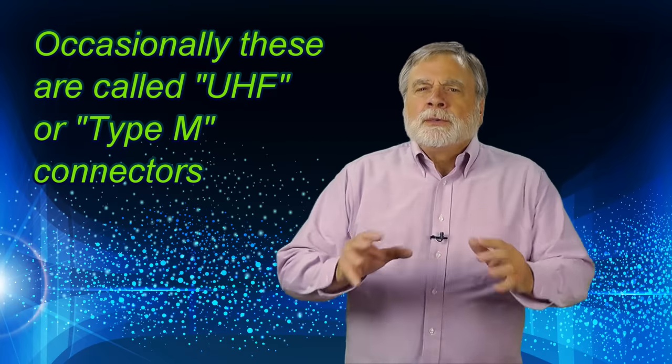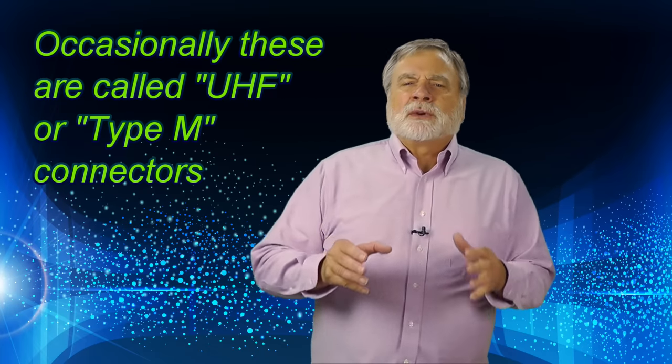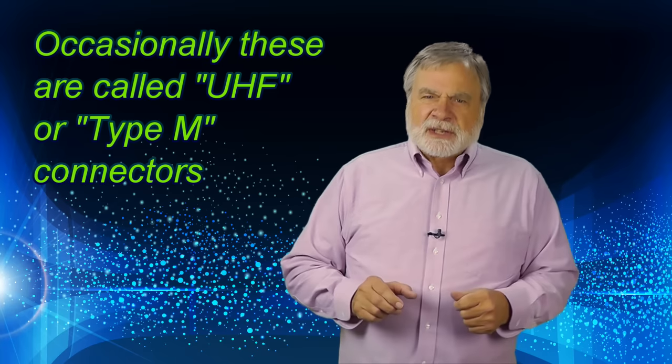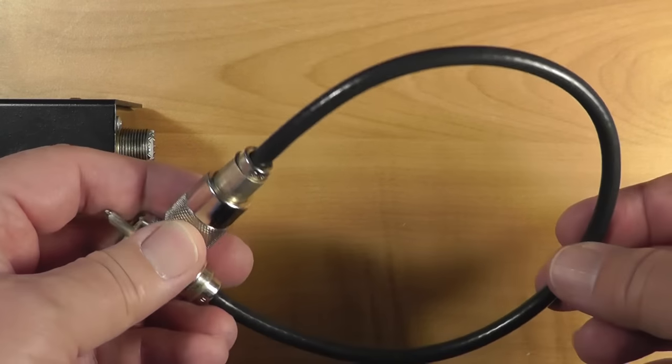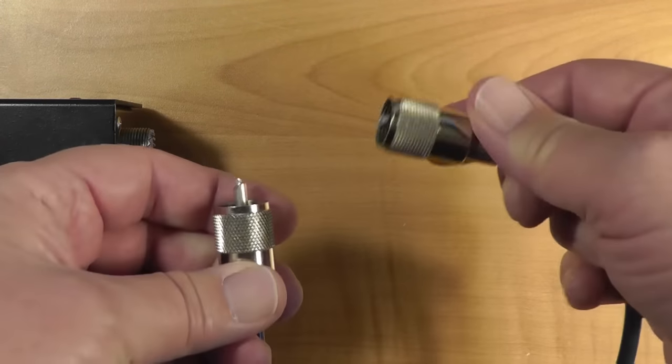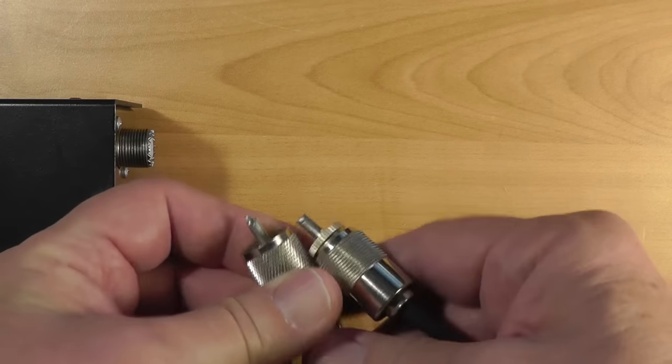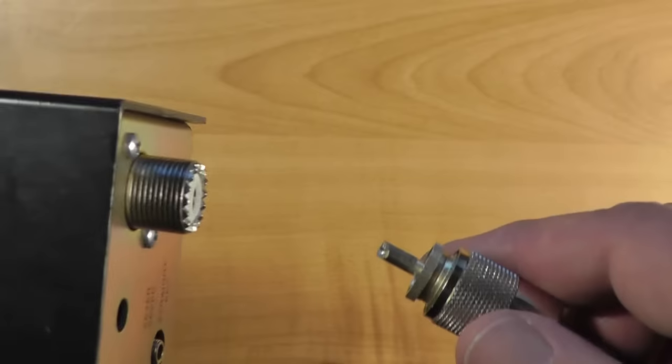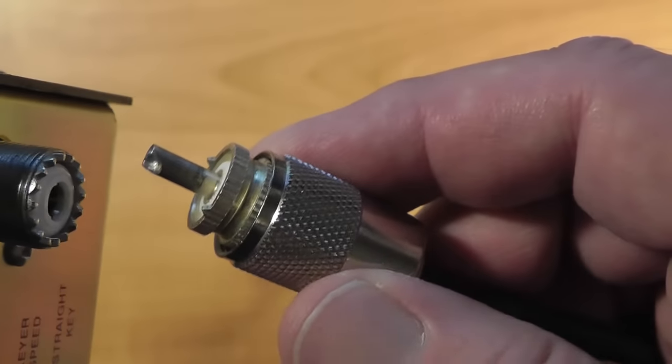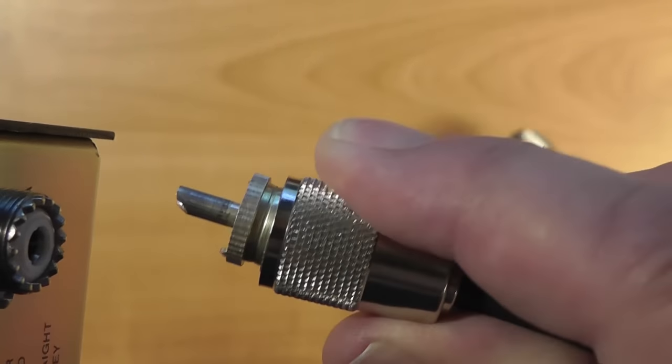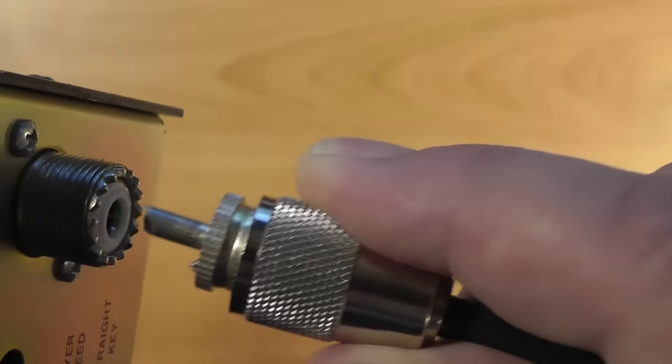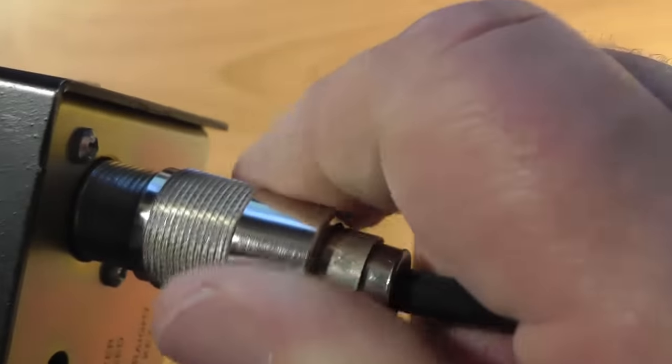Once in a blue moon, you will hear the pair referred to as UHF connectors, but mostly you'll hear the separate designators. In nearly every case, cables have PL-259 connectors on each end, and equipment has an SO-239 jack. You pull back the knurled ring so that you can see the little protrusion here.